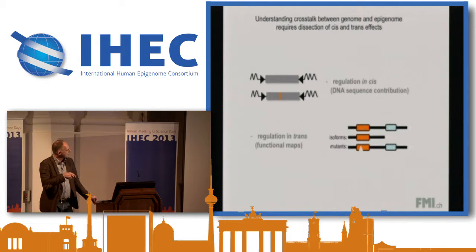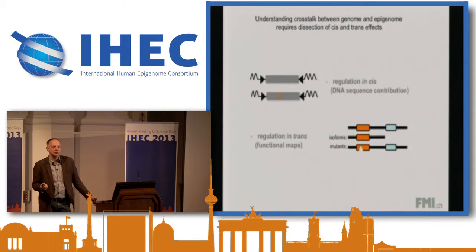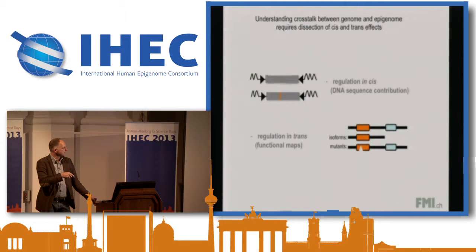Another aspect that's important from the regulation in trans is how proteins that are constituents of chromatin know where to go. These proteins have multiple domains, and these domains can guide them to different aspects. The question of which domain is doing what — how can we learn this — we've been using a biotin-tagging approach to learn about protein family members and what their guidance cues are.